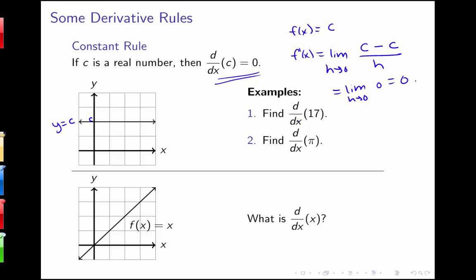To look at a couple examples: anytime we have the derivative of a constant, we're going to have the value be 0. So d/dx of 17 is 0, and d/dx of π is 0. You'll often see π or e or something that looks like a variable but is really a number thrown into a derivative problem, and you need to recognize that the derivative of those kinds of numbers is also 0. Similarly, the derivative of something like ln(2) is 0 because that's just a number, and the derivative of e² is still 0 because that's just a number.